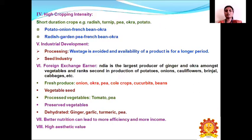Another important factor is high crop intensity, as vegetables are short-duration crops. Radish, turnip, peas, okra, and potatoes can be cultivated in a shorter period of time. We can follow a cropping pattern like potato, onion, French bean, and okra, or radish, garden peas, French bean, and okra in succession.